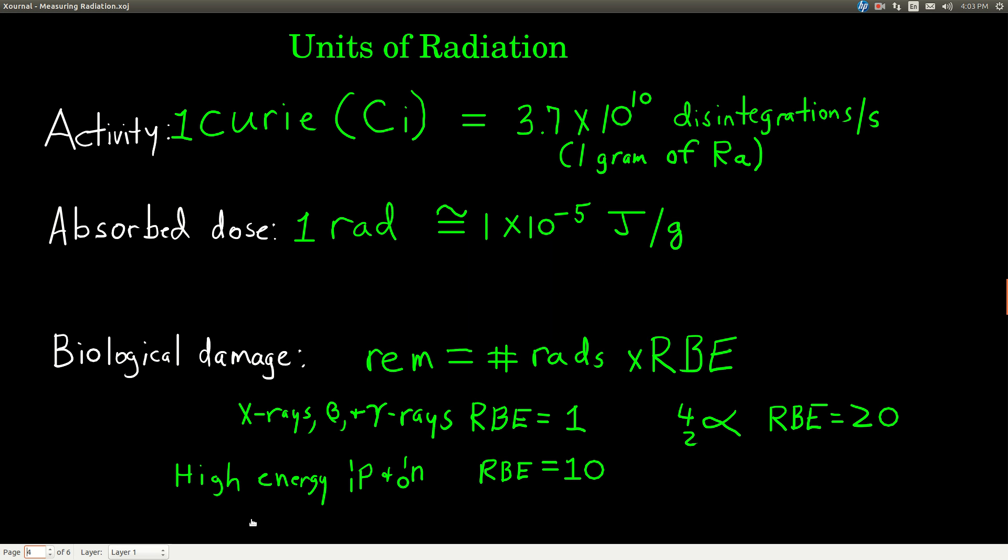So the units that we use when we're talking about radiation depend upon what we're talking about that radiation doing. The common units we use for what's called activity. Activity is just how much of an isotope, of a sample of an isotope, is decaying per second. And the more common unit is called the curie.